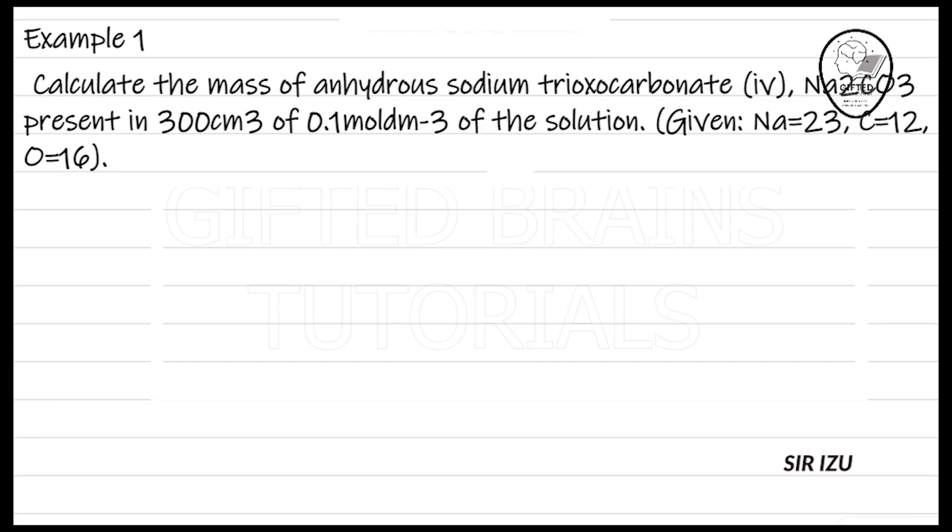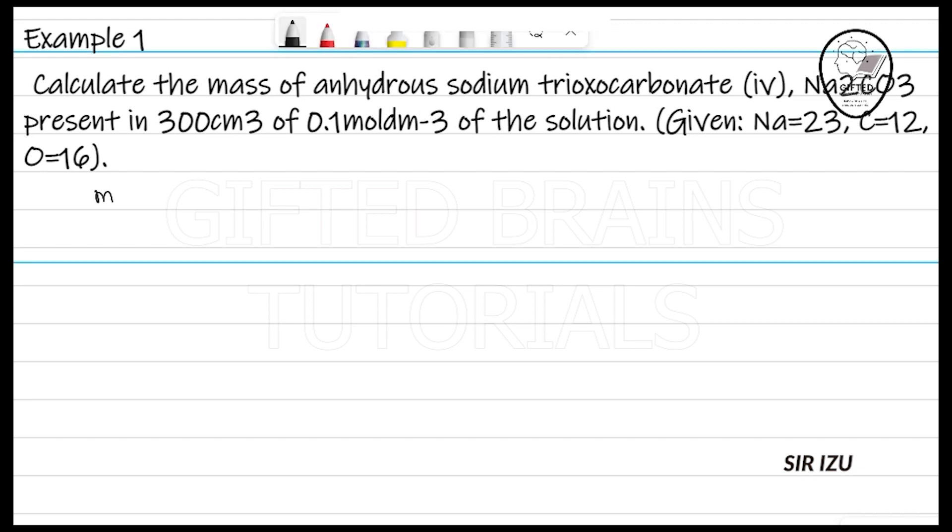Example 1: Calculate the mass of anhydrous sodium trioxocarbonate (IV), Na2CO3, present in 300 cm³ of 0.1 mole per dm³ of the solution. We have to get the mass of sodium trioxocarbonate, and one relationship that helps us get the mass is mole equals mass over molar mass. Since we are asked to get mass, mass will equal mole times molar mass.